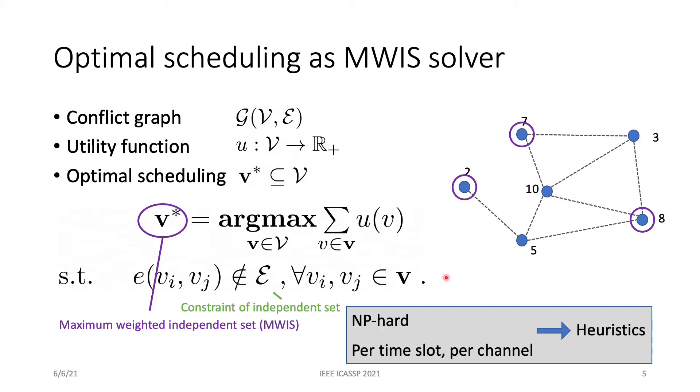The MWIS problem is NP-hard and it has to be solved for every time slot on every channel. So, we have to seek heuristics that are efficient.